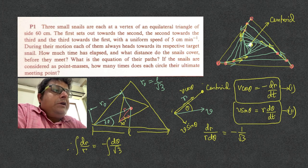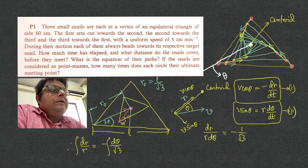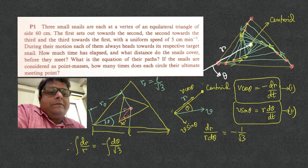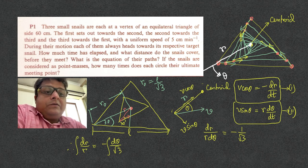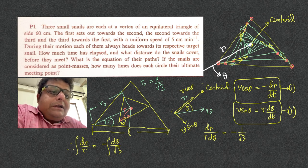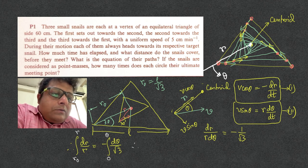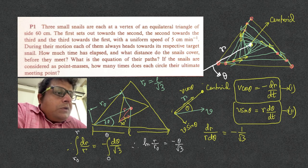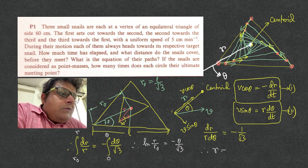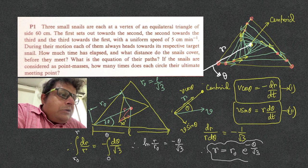In polar coordinates, the centroid is the origin, r is the radial distance, and θ is the angle. Integrating both sides: integral of dr/r from r₀ to r equals −(1/√3)·integral of dθ from 0 to θ. This gives log(r/r₀) = −θ/√3. Therefore the equation of the path is r = r₀·e^(−θ/√3). That is the equation of the path.